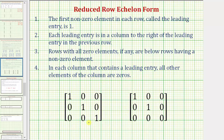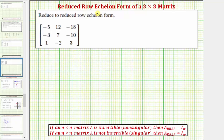Here are two examples of three by three matrices in reduced row echelon form. Now let's begin performing row operations to write this matrix in reduced row echelon form. Let's begin by obtaining a zero in this position as well as this position. Looking at row one and row three, notice six times negative two plus twelve would be zero, so let's replace row one with six times row three plus row one. Now looking at row two and three, notice three times one plus negative three would be zero, so let's replace row three with three times row three plus row two.